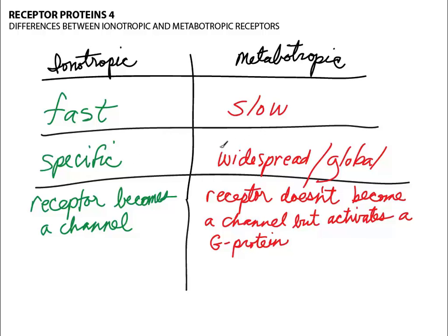Metabotropic receptors are quite different, especially the ones that involve second messenger cascades. What happens there is you have a neurotransmitter bind to a receptor in a specific area, but then the activated G-protein can cause widespread change in the metabolism or the chemical properties of that neuron, which can lead to changes in many different channels.